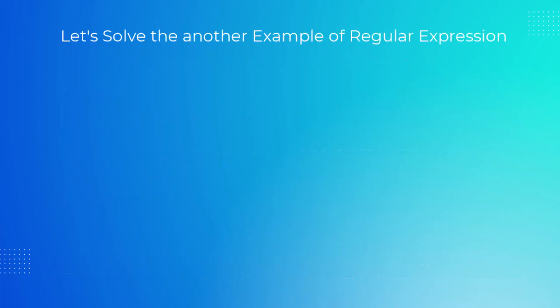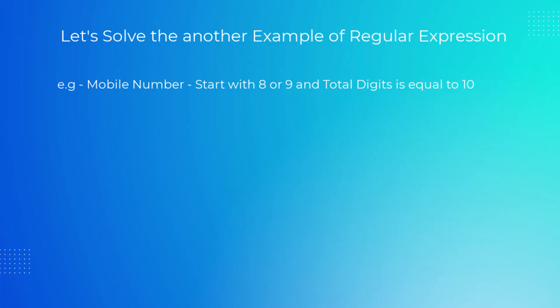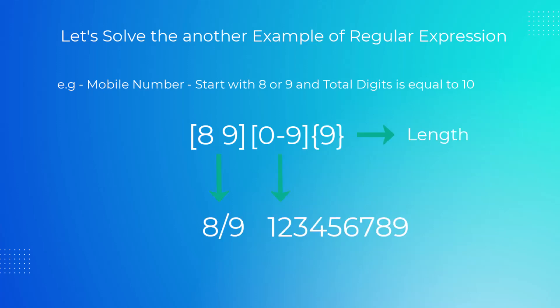Now we solve some examples for better understanding. The problem: mobile numbers start with 8 or 9, and the length of the number should be 10. For checking the first digit if it is 8 or 9, we can write like this. After that, we need random mix numbers, so we can write any numbers between 0 to 9, then set the total length of the number accordingly.